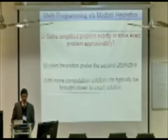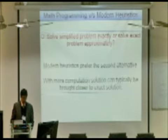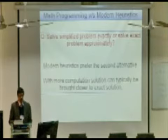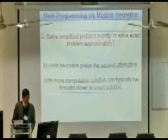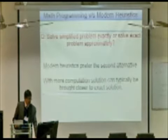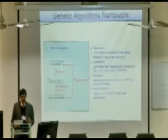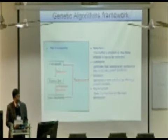We have math programming techniques which have been established for quite a long time and the main issue that arose when problems started becoming more complicated is whether we want to solve a simplified problem exactly or solve exact problem approximately. The first approach is the math programming approach and modern heuristics talk about the second alternative. With more computation the solution can typically be brought closer to the exact solution and one of the most prominent approaches in this is the approach of genetic algorithms.